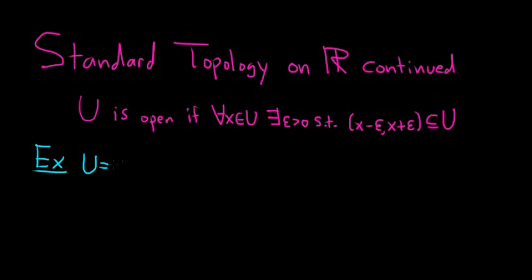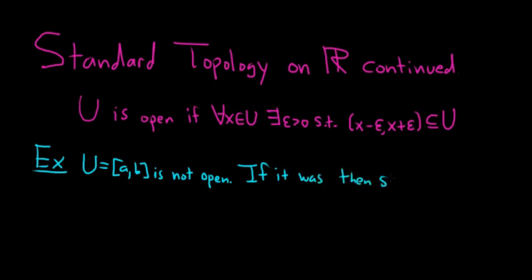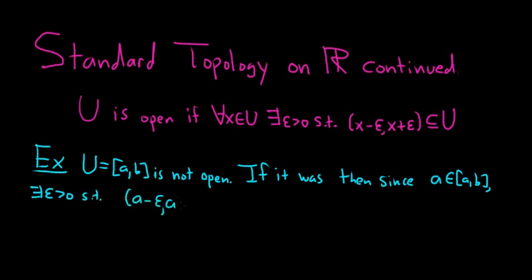Let's look at U equals the set [a, b]. The set is not open — let's prove that by contradiction. If it was open, then since the element a is in [a, b], there would be an epsilon neighborhood about a that's entirely contained in the set. So there exists some epsilon greater than 0 such that the set (a minus epsilon, a plus epsilon) is contained in [a, b].